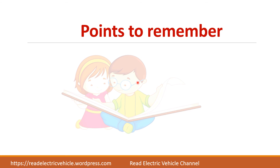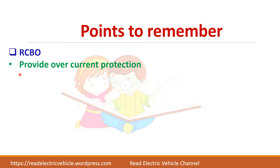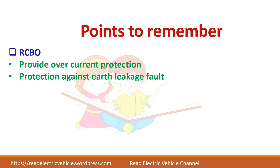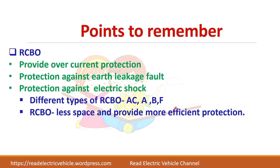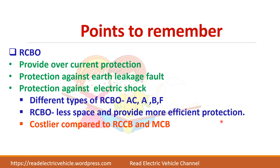The key points to remember are that RCBO can provide overcurrent protection, short circuit protection, protection against earth leakage faults, and protection against electrical shock. Different types are available: AC, A, B, and F. Their advantage is that they occupy less space and provide more efficient operation, whereas they are costlier compared to RCCB.